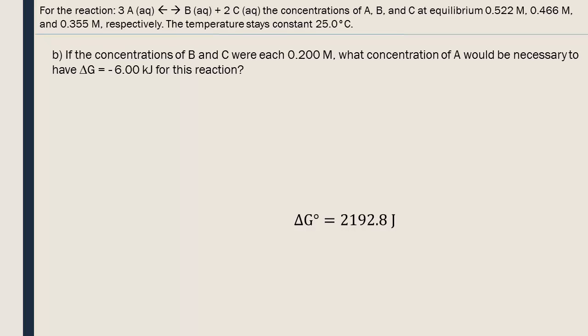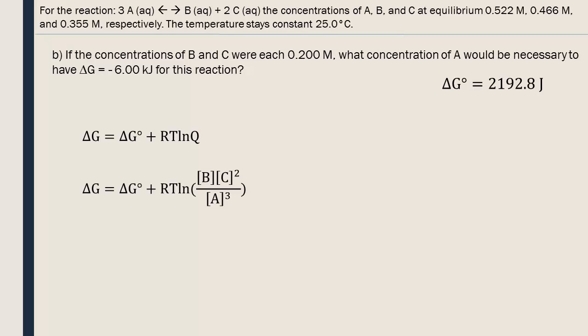For part B, we are going to use the answer we just got. It's better to use the non-rounded version. We need to determine the concentration of A necessary so that the non-standard value of free enthalpy is negative 6.00 kilojoules. We will use the following equation, putting the reaction quotient equation inside of this one.